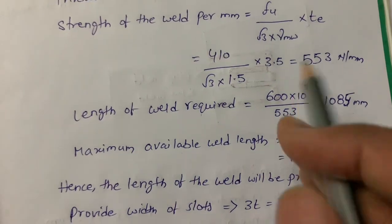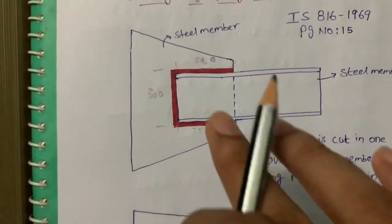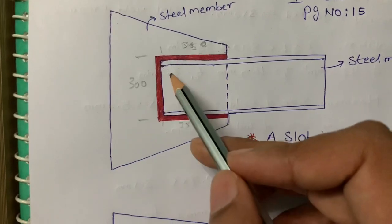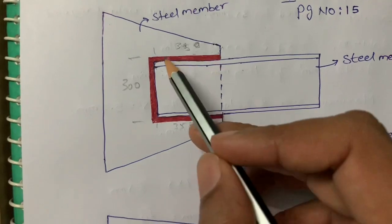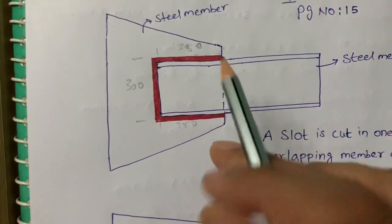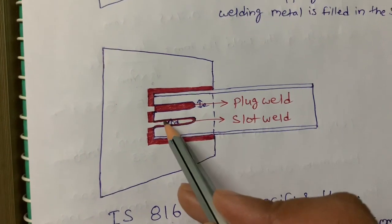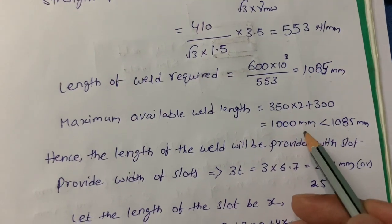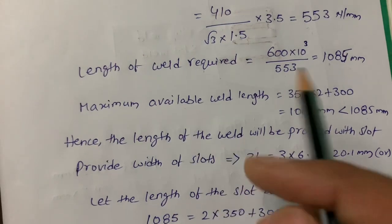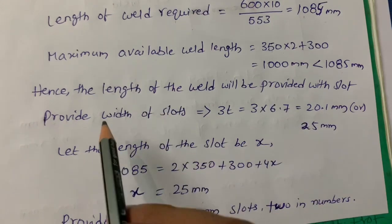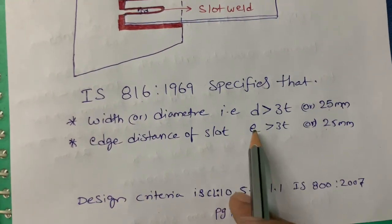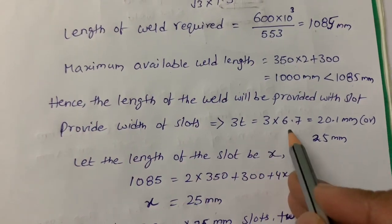We have 1000 mm total available length but require 1085 mm, so we cut the plate and provide slot welding for the extra 85 mm. Width of the slot: code specifies width/diameter must be ≥ 3 × thickness or 25 mm. So 3 × 6.7 = 20.1 mm. Code specifies we take 25 mm, so width = 25 mm.